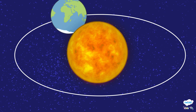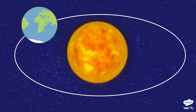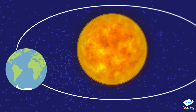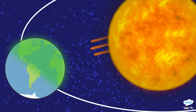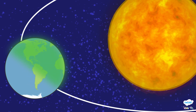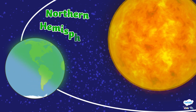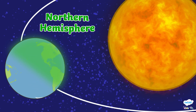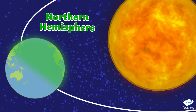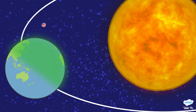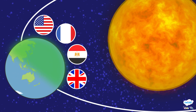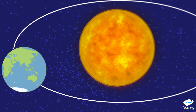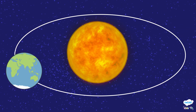When the North Pole is tilted towards the Sun, it's summer in countries in the Northern Hemisphere, such as the UK, the USA, France and Egypt. And the weather is warmer.